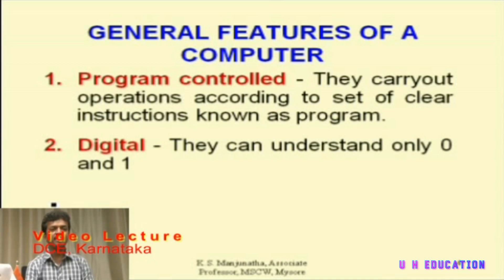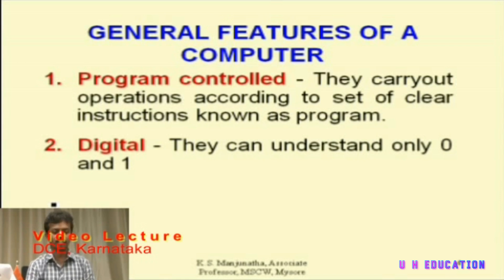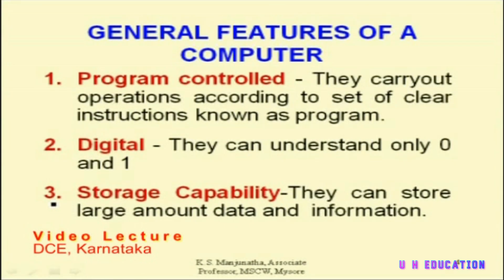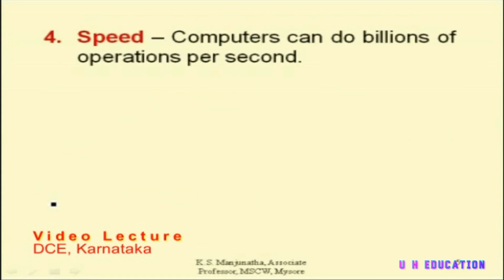A computer, unlike a human being, cannot understand everything. A computer can understand only two specific digits: 0 and 1. Just by understanding these two simple symbols, 0 and 1, it is doing wonders in the world. Next, the storage capability of a computer — we can store huge amounts of data and information in its memory, which could be secondary memory. No human being can match the speed of a computer. A computer can do billions of operations in just one second. Nowadays the speed of the computer is expressed in nanoseconds or milliseconds.